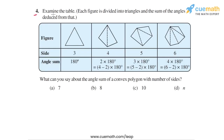Question 4 says examine the table — this table that you see here. Each figure is divided into triangles and the sum of the angles is deduced from that. First we have a triangle, with three sides, and the sum of the angles inside the triangle is 180 degrees.